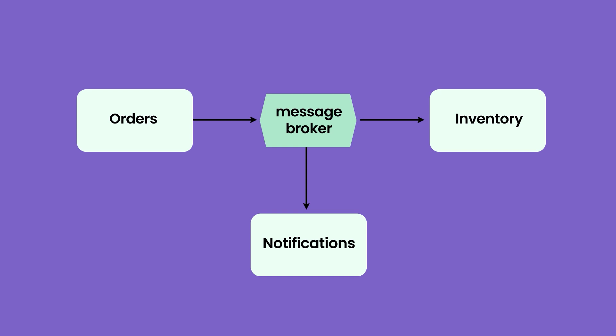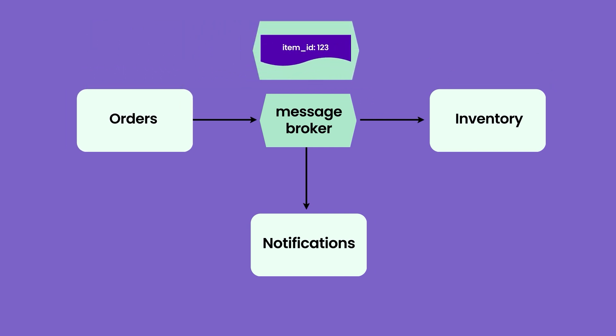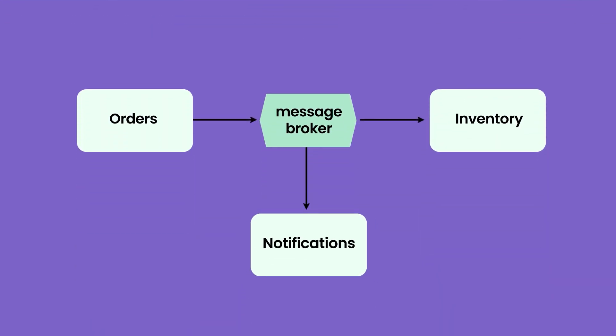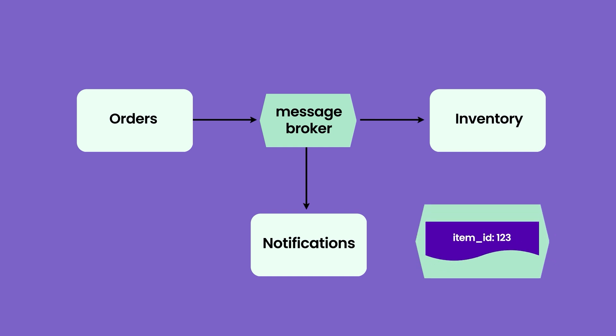Let's take the example of three services: orders, inventory, and notifications. The order service emits an event like order placed with some item ID, and the inventory service or the notification service would consume this event and react to it. Maybe the inventory service would send a message back to the order saying this item is not available, or it is available and the quantity is there so you can proceed with the order.